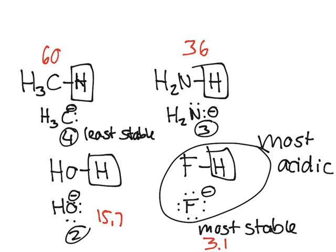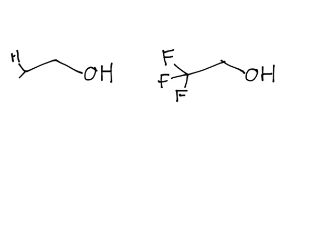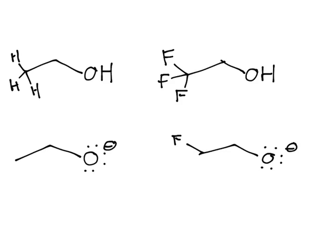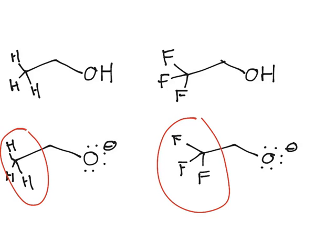Now let's talk about another thing that will stabilize the conjugate base. Let's say you have a molecule like this with F-C-C-OH versus something like this with H-C-C-OH. After it gets deprotonated, each molecule would look like this. The only difference is the atoms at the end over here. Which one do you think would be more acidic?